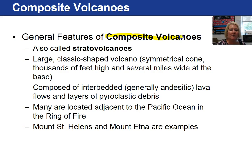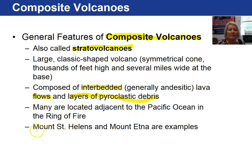Composite volcanoes, also known as stratovolcanoes, are the last type we'll talk about. These are your classic-shaped volcanoes — symmetrical cones, very high, and wide at the base. They are composite in the sense that they consist of interbedded lava flows and pyroclastic debris. Most composite volcanoes are located on the Ring of Fire in the Pacific Ocean. Examples include Mount St. Helens and Mount Etna. These volcanoes erupt pyroclastic material and are quite dangerous.